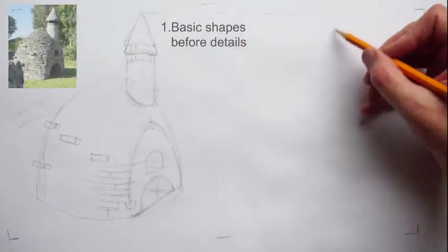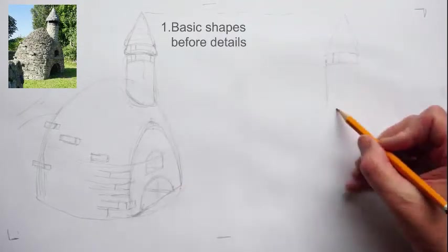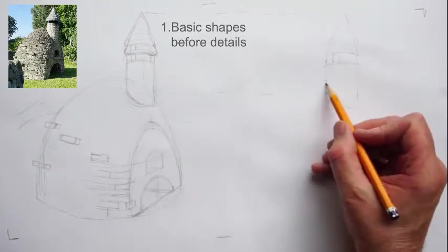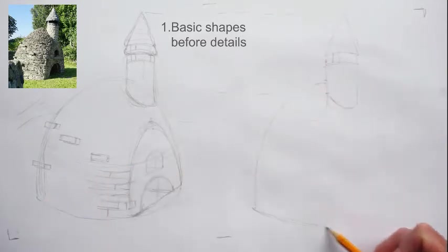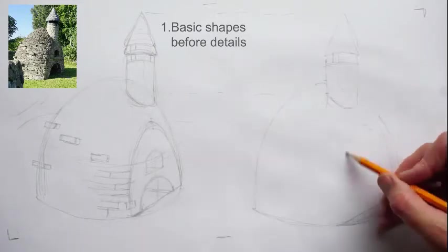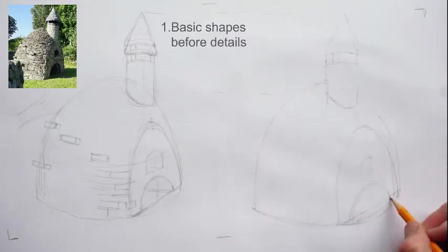We're basically creating basic shapes before we put in any detail. So the conical hat of the chimney here, and then the cylindrical shape of the chimney. Then there's the dome shape of the beehive hut, and there's a kind of slice taken out of it and then a kind of arch shape at the front.